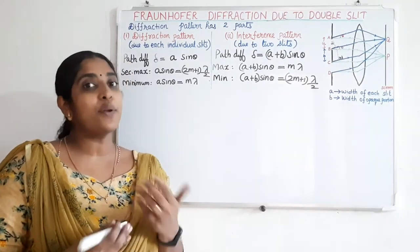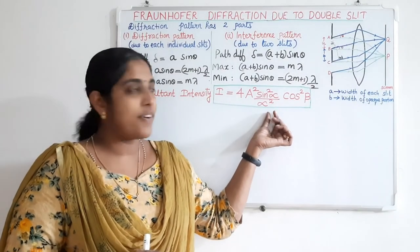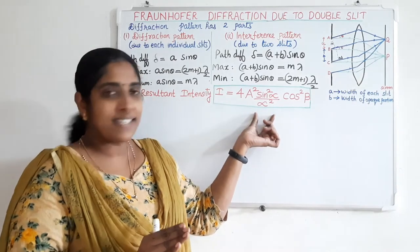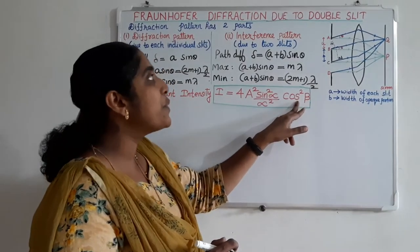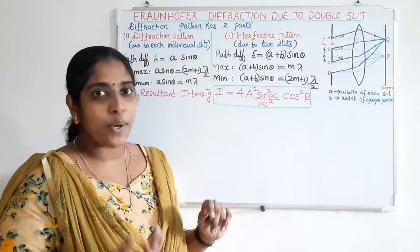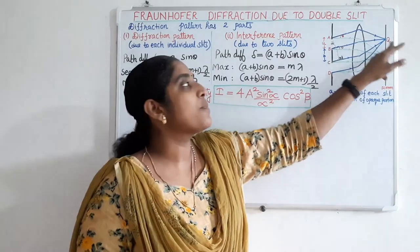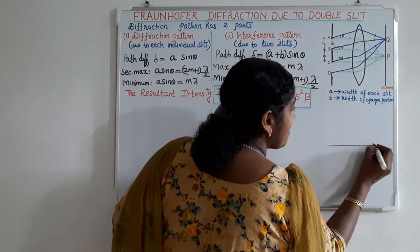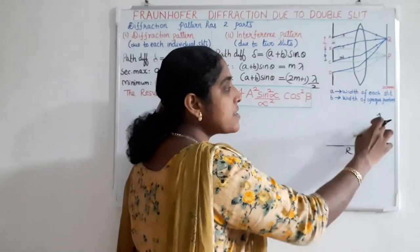The resultant intensity is the square of the resultant amplitude, and it can be written as I equals 4A² sin²(alpha) / alpha² times cos²(beta). The term A² sin²(alpha) / alpha² is the resultant intensity due to diffraction at a single slit, as we have already seen. The additional term 4 cos²(beta) comes due to the interference effect of the double slit. The total amplitude is the superposition of amplitudes from each individual slit, represented as vectors R.